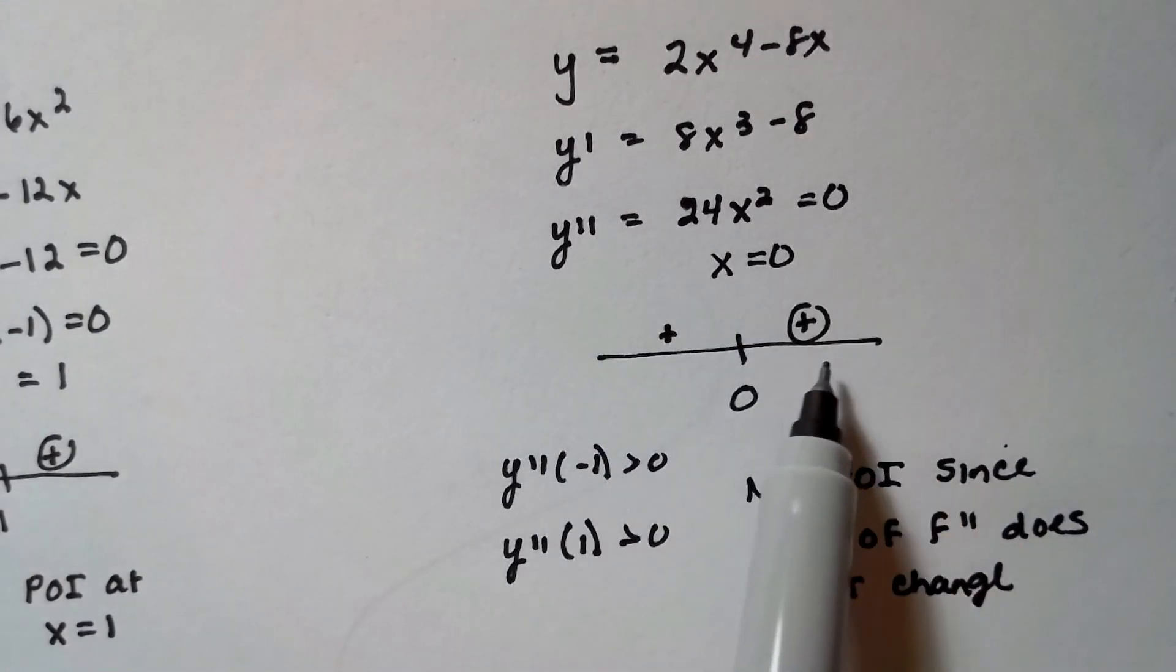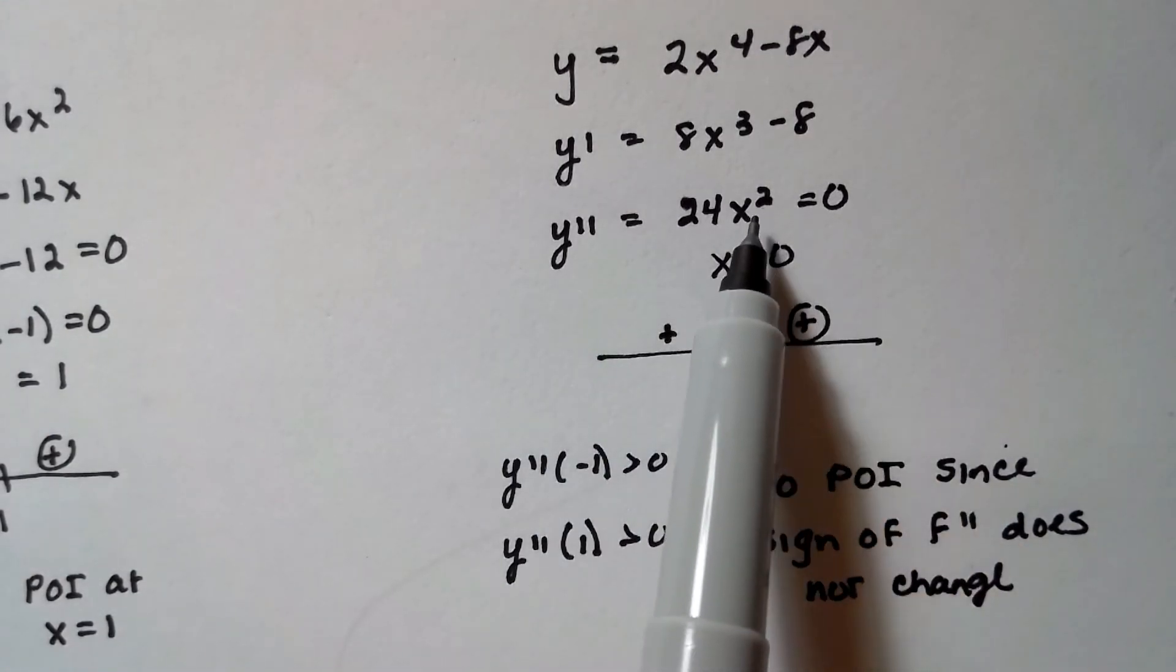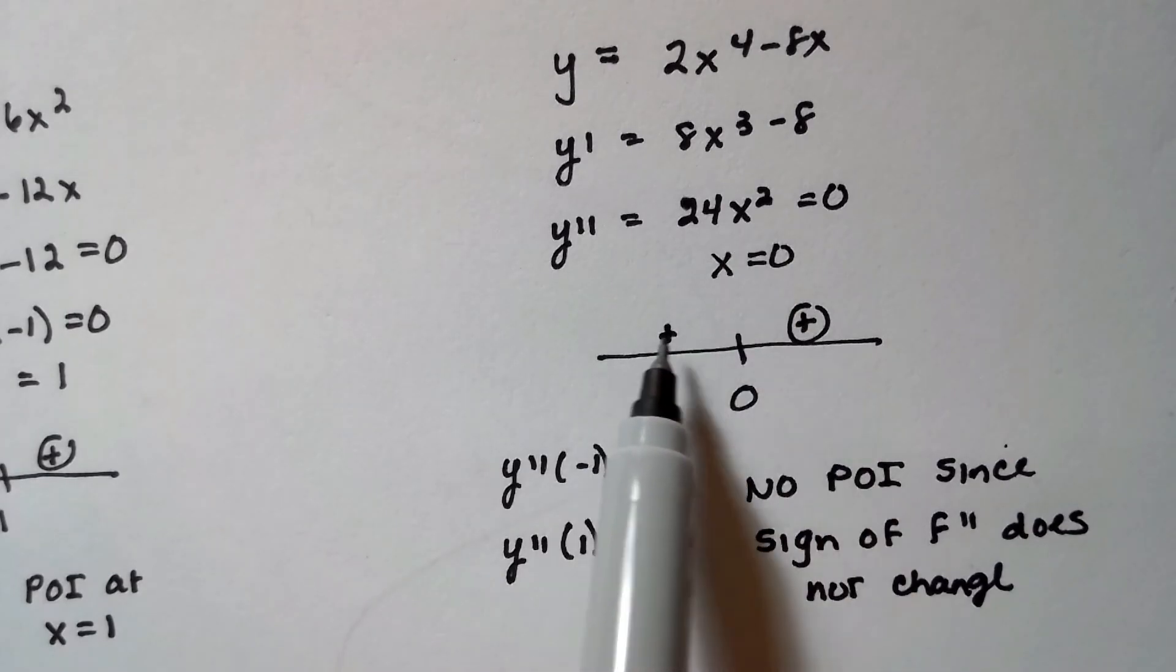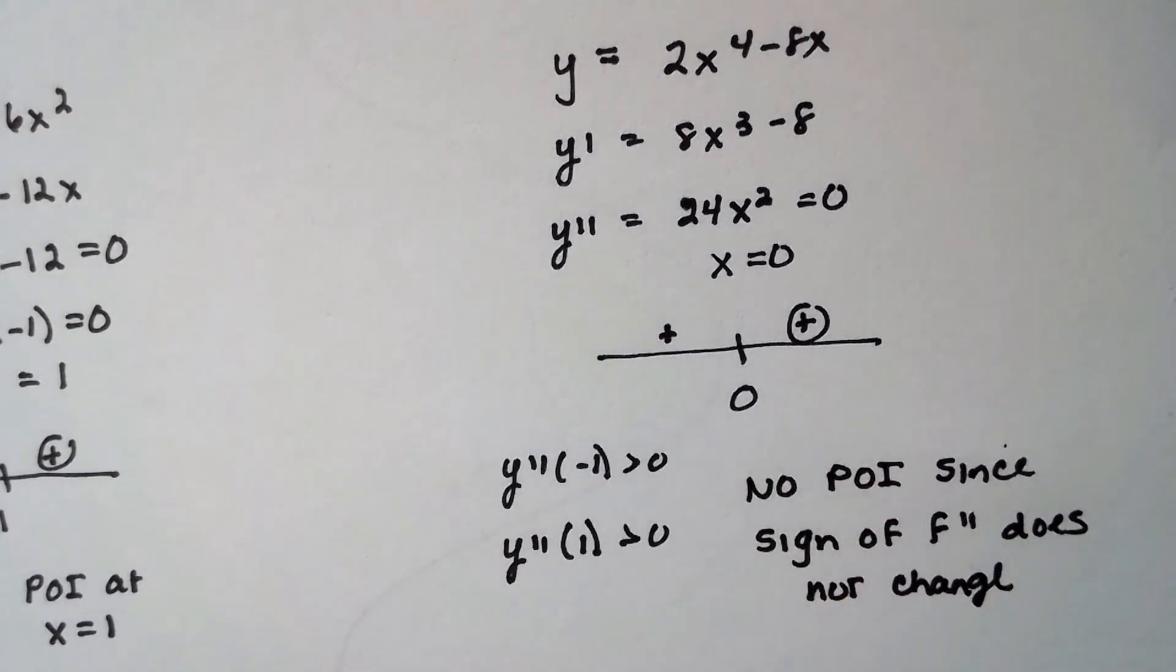And guess what, if I plug in a one, a positive one, to the right of zero, I'm gonna get the same number, it's still gonna be positive. So since the second derivative equals zero but does not change sign, there's going to be no point of inflection at x is equal to zero. Capisce?